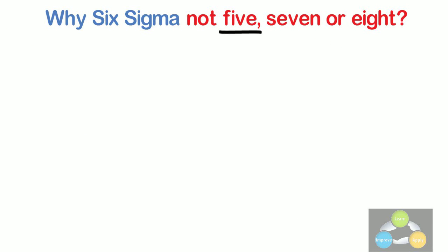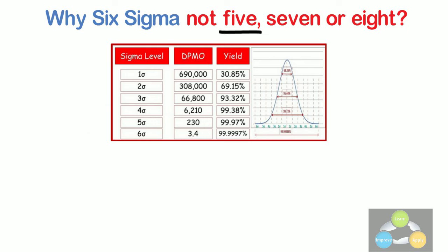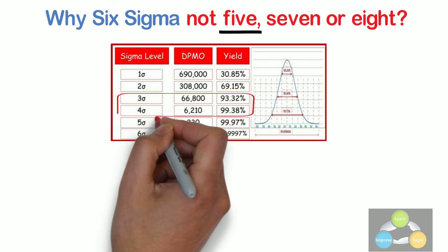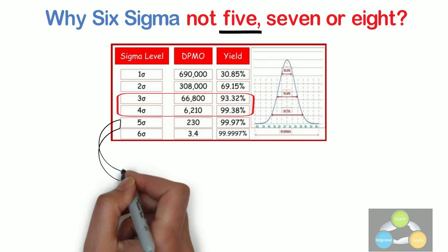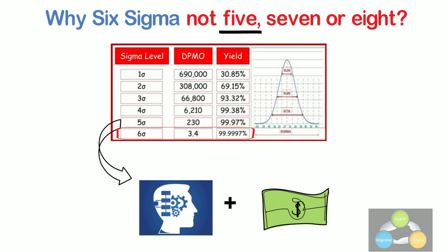Running a process in 5 sigma level is quite possible. In fact, most traditional companies run in 3 to 4 sigma levels. But a process which is running in 5 sigma level could be improved to a Six Sigma level by following some systematic approach and little more investment.